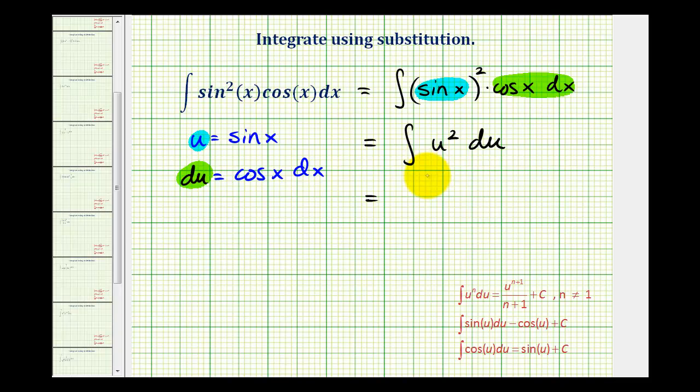We would have u to the third divided by three plus c. But of course, we need our function in terms of x. So we'll write this as one third sine cubed x plus c as our antiderivative.